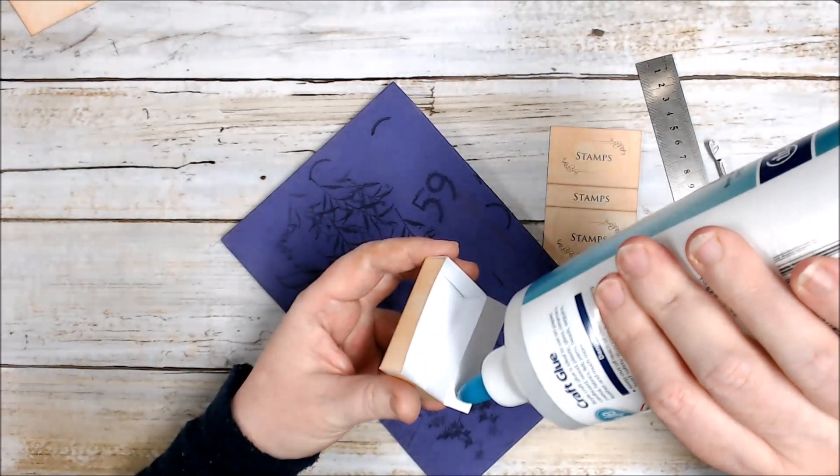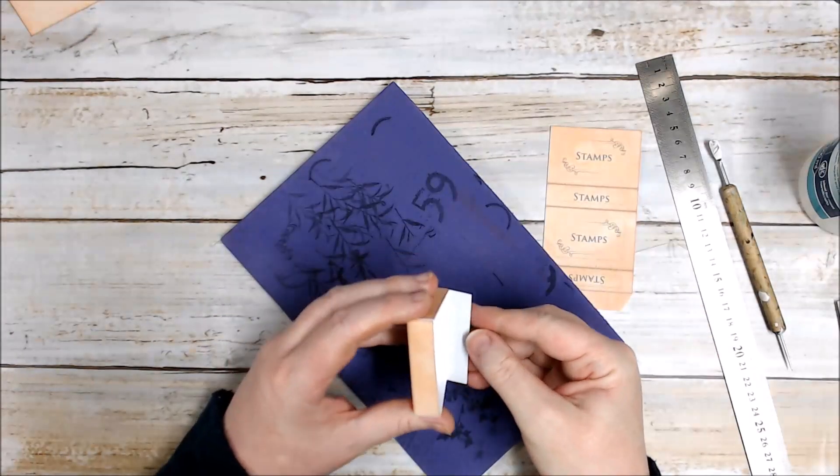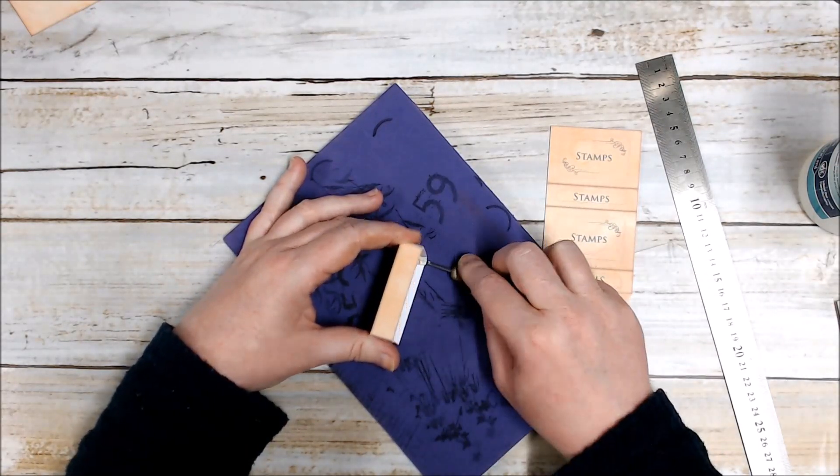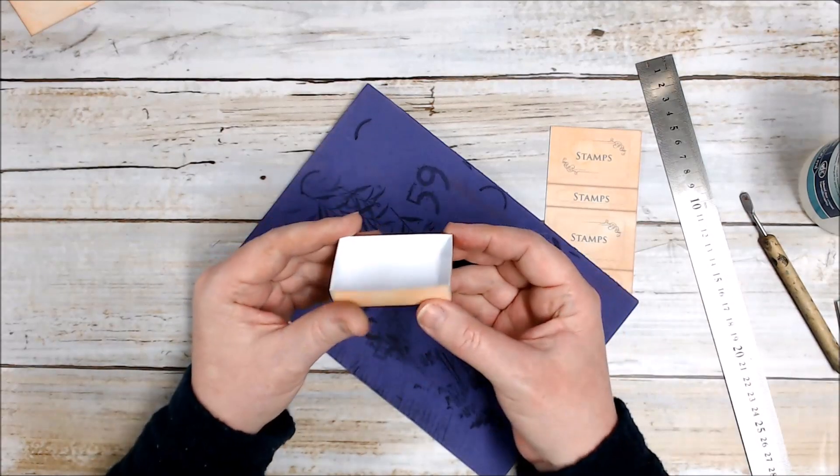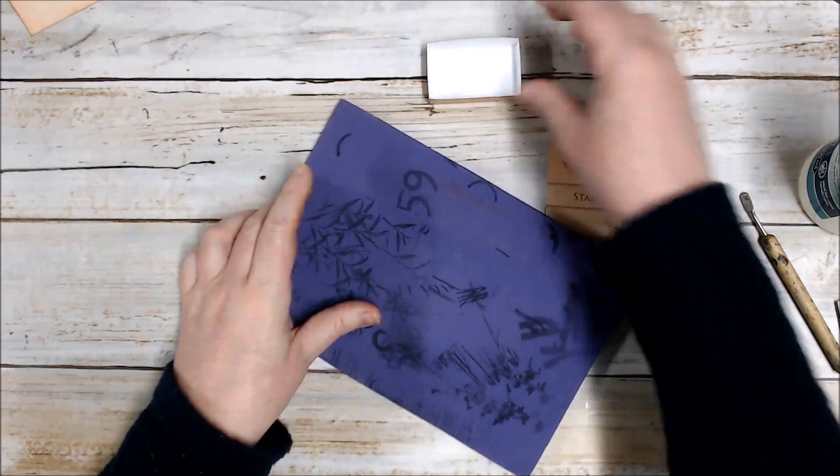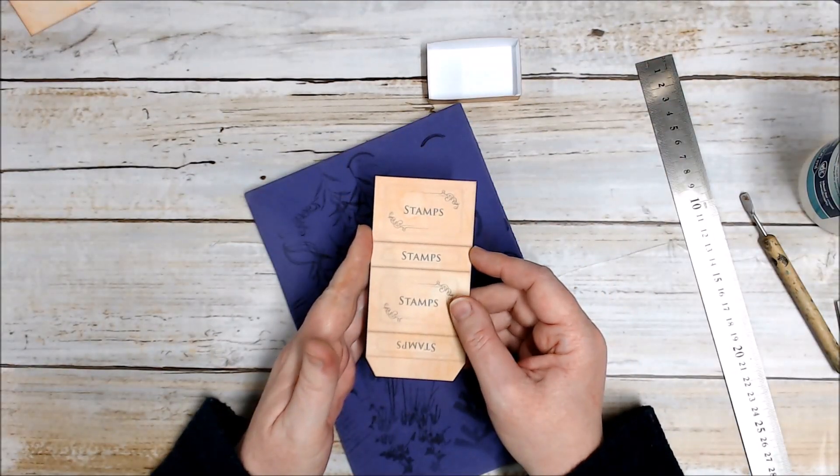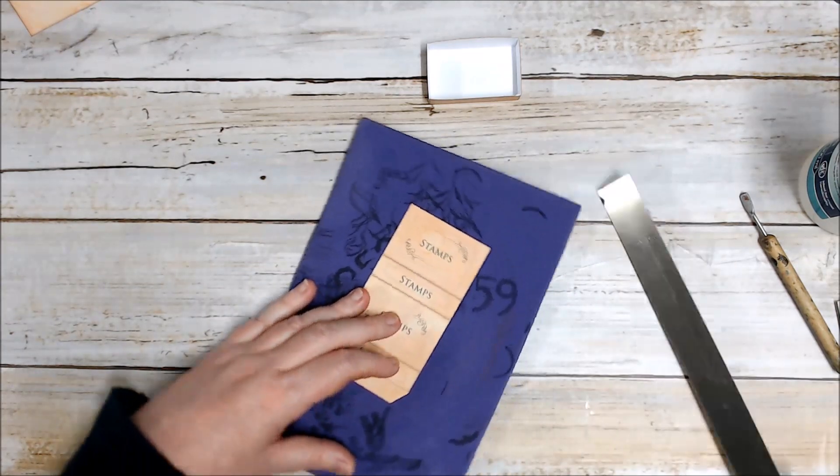And there we have our little matchbox. I'll just pop that aside to dry whilst we create the sleeve for our matchbox. So again there's lines along here where you'll need to score.